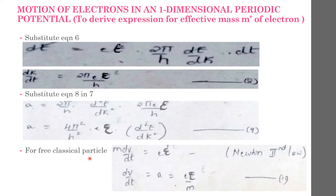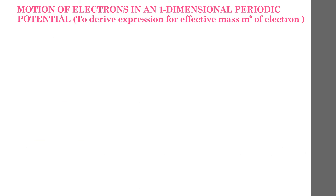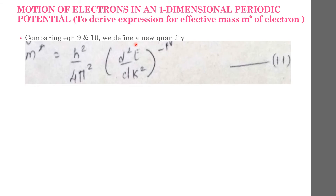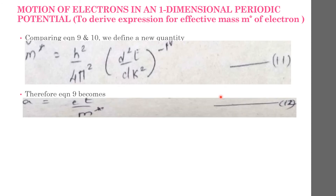For a free classical particle, from Newton's second law: m(dv/dt) = eε, so acceleration a = dv/dt = eε/m, equation 10. Comparing equations 9 and 10, we define a new quantity m star = h²/(4π²) × (d²E/dK²)⁻¹, equation 11. Then equation 9 becomes a = eε/m star, equation 12.